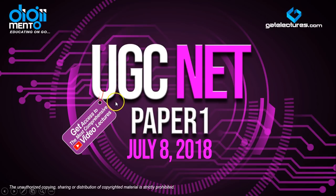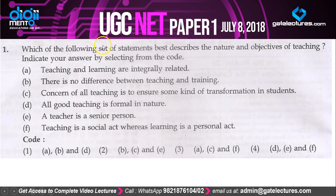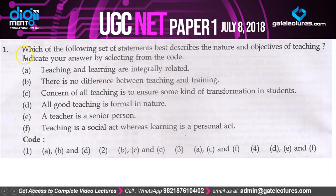Hello everyone and welcome to DigiMento Educations. In this video we provide solutions to Paper 1, which is a general common paper to all the streams of UGC NET conducted on July 8, 2018. Without wasting any time, let's get to question 1. This paper was sent by one of our students so questions may not be very clear, but we will update the video once the official question paper and answer key is released. We have put a team to solve these papers, but if you find any answer wrong or any topic discussed incorrectly, just put it in the comments.